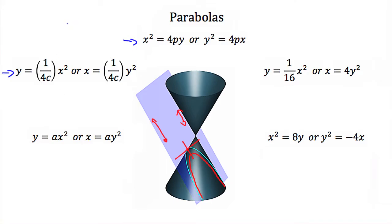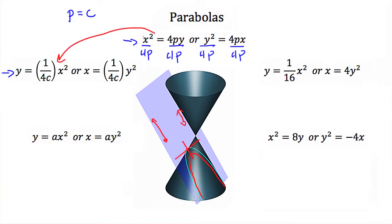Now, if you imagine that p is equal to c, you may notice that if you divide both sides of these equations by 4p, the two forms become the exact same equation. Some textbooks still have a different standard form, saying that a parabola is y is equal to ax squared, or x is equal to ay squared. It should be noted that a is just equal to 1 over 4c.